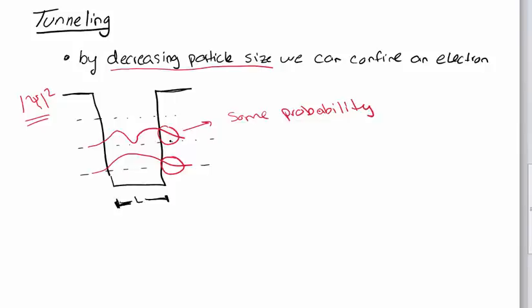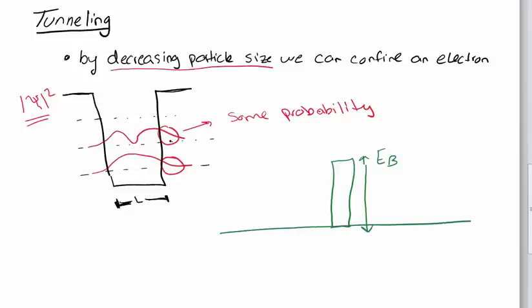So if we have a quantum barrier, not just a well, but let's just look at a barrier. The barrier has some finite thickness and it has some energy. Let's call the energy E barrier. And let's say that we have an electron that's on this side of the barrier and the electron has some energy. Or particle, if it's not an electron, has some particle energy EP. And we have the wave function of this particle.